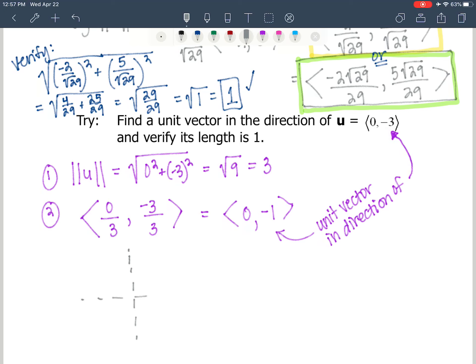So 0, negative 3 means its horizontal component is 0, and its vertical component is negative 3. So that vector looks just like that. It's going due south. And it's a length of 3 units.